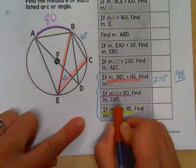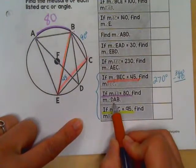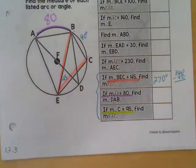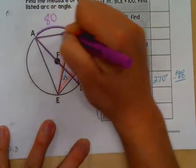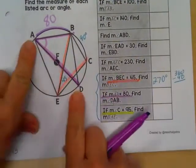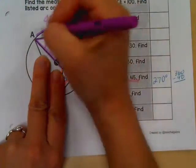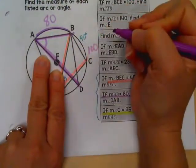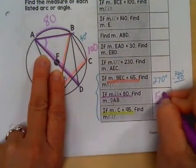So if the measure of arc AB is 80, they want us to find angle DAB. DAB is this angle. Well, we know this is a diameter. So from ACD, that would be 180. So that means this is 100. Our angle that we want is half of that. So it's going to have to be 50.